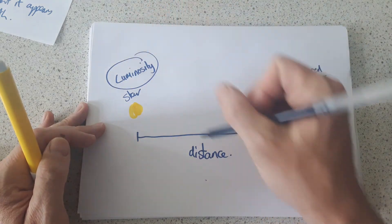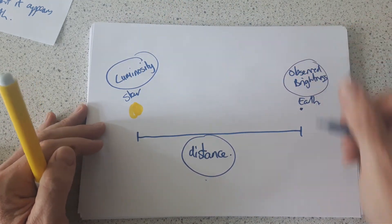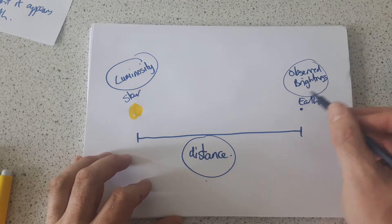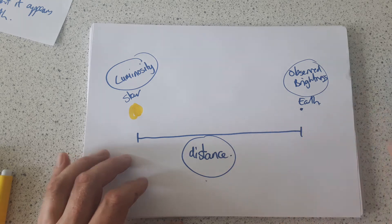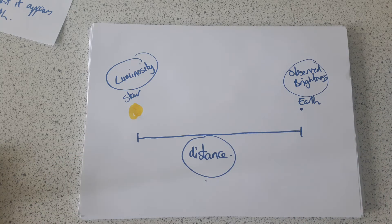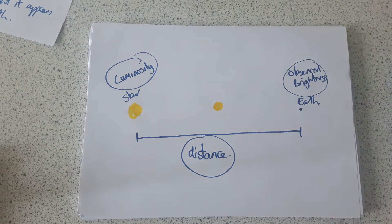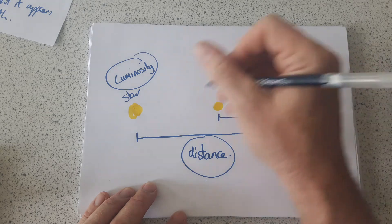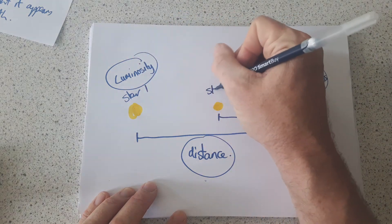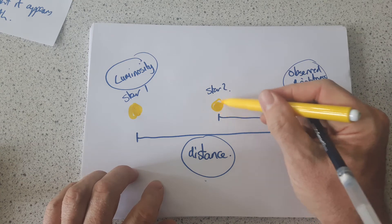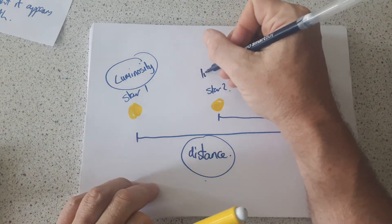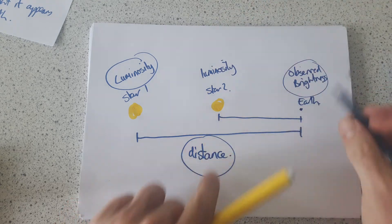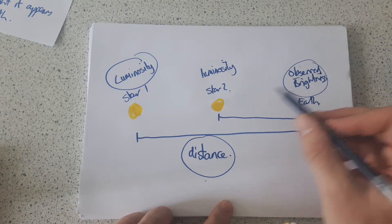These three factors all interact with each other, in as much as the observed brightness of a star will decrease as the distance gets bigger. So if we had star 1 and star 2, and they had the same luminosity — the same brightness or power output — then star 2 would appear much brighter from Earth because it's nearer.